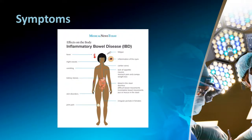Symptoms of inflammatory bowel disease include fever, night sweats, vomiting, kidney stones, skin disorders, joint pains, fatigue, inflammation of the eyes, canker sores, lack of appetite, nausea, stomach pain and cramps, weight loss, blood in the stool, diarrhea, difficult or incomplete bowel movements, pus or mucus on the stools, and irregular periods in females.